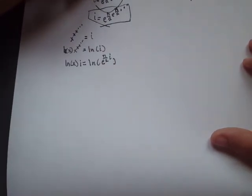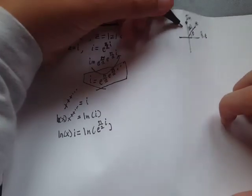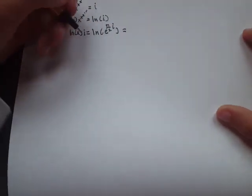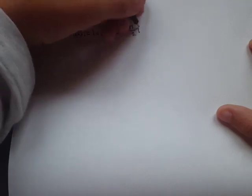The natural log and e are inverse operations, so they cancel, which leaves us with π over 2 times i. Since i is on both sides, we can divide both sides by i and cancel it out, so natural log of x equals π over 2.